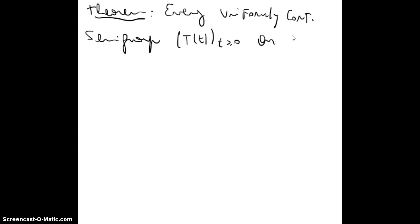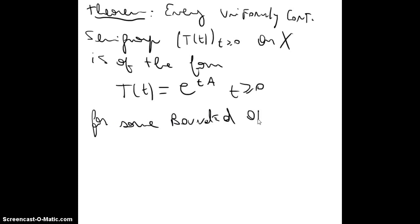This is by definition if the map t to T(t), this is in L(X), this is in the real positive numbers, if this map is continuous with respect to the uniform operator topology in L(X). But this is what we've been using all the time. So theorem: every uniformly continuous semigroup T(t) with t greater than equal to zero on Banach space X is of the form T(t) equal to e^{tA}, t greater than equal to zero, for some bounded operator A, A is in L(X).